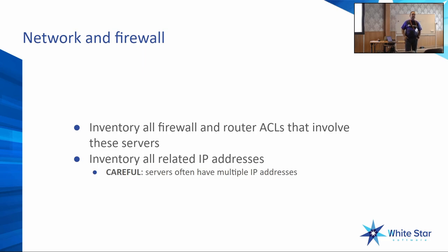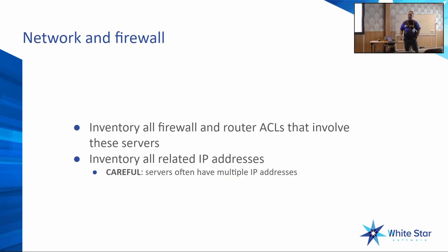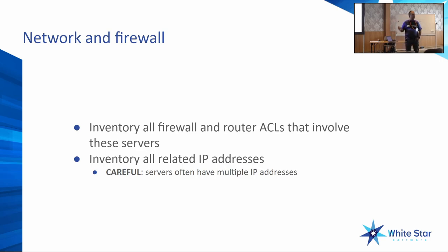Don't forget to inventory all the network stuff, especially firewalls and all the ACLs — really, really important. This is another pitfall we see all the time: we bring the system up but nobody can connect because somebody forgot some port, a UDP port for the classic AppServer or something. So inventory all your firewalls, routers, everything, and all the IP addresses. Be careful — your servers could have multiple IP addresses, especially in large organizations. You might have a back-end IP for backups and another for the application. A classic AppServer linked to one IP address in ubroker.properties could break when you change IP addresses on the new server.